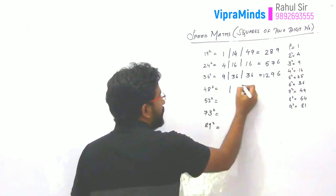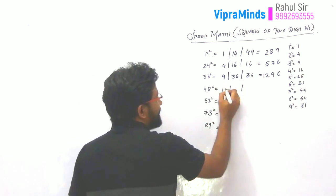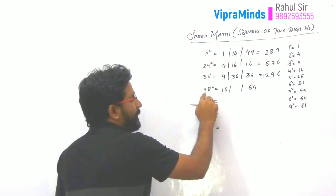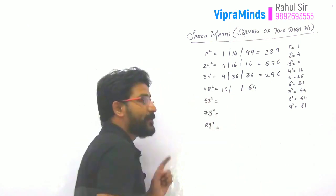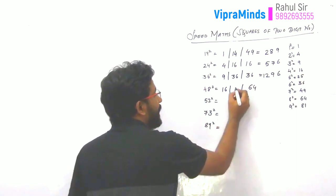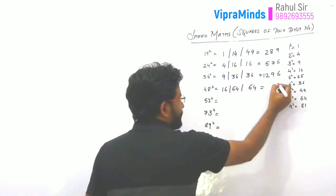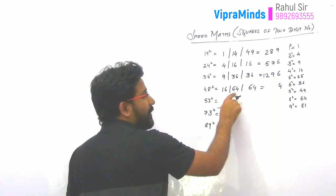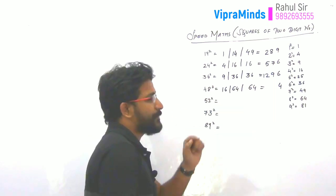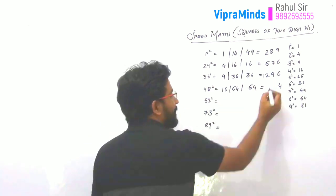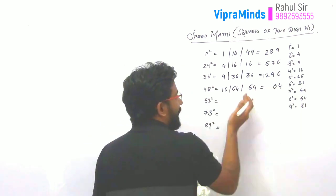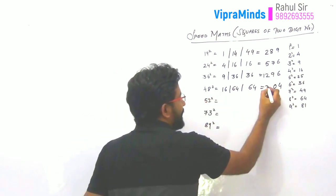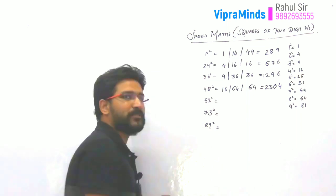Next example is 48 squared. 4 squared is 16. 8 squared is 64. 8 into 4 is 32, and the double of 32 is 64. Write 4 as it is and carry forward 6. So 6 plus 64 is 70 — write 0 and carry forward 7. So 7 plus 16 is 23. Your answer will be 2304.